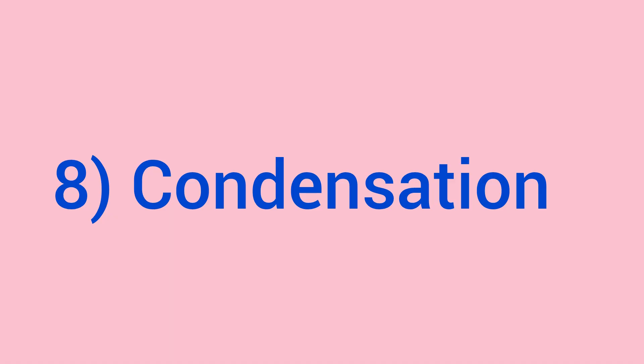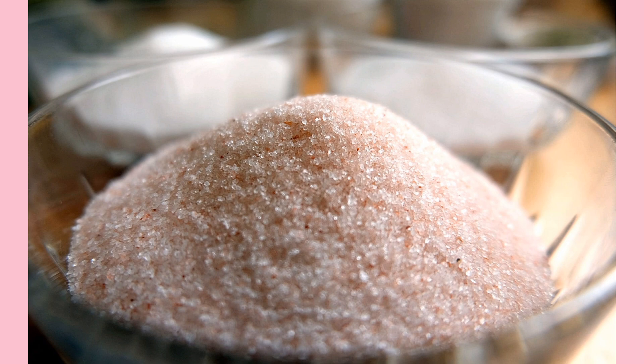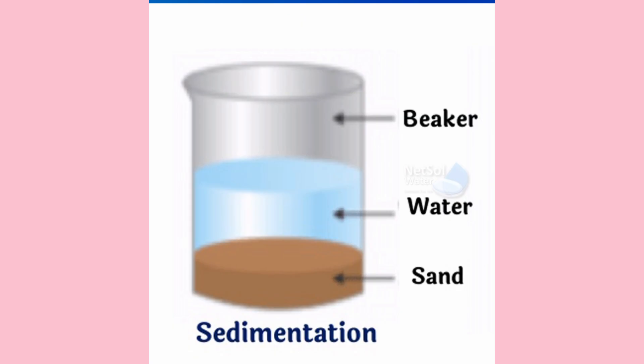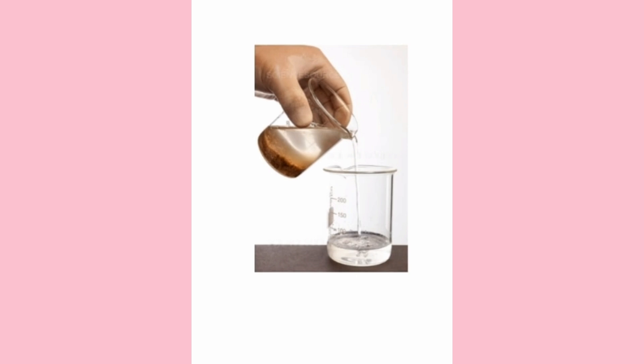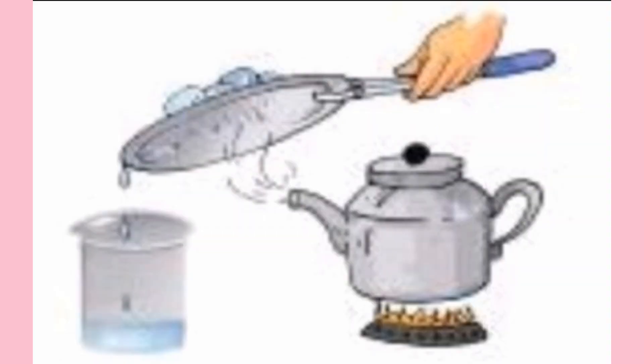The ninth method is condensation. The process of conversion of water vapor into its liquid form is called condensation. Take a mixture of sand and salt and keep it in a beaker. Add some water to it and leave the beaker aside for some time. Sand will settle down and the liquid undergoes decantation. We need to separate the salt from the decanted liquid. Transfer the liquid into a kettle and notice the steam coming out. Take a metal plate with some ice on it and hold the plate just above the kettle. When the steam comes in contact with the metal cooled with ice, it condenses and forms liquid water — this is called condensation.